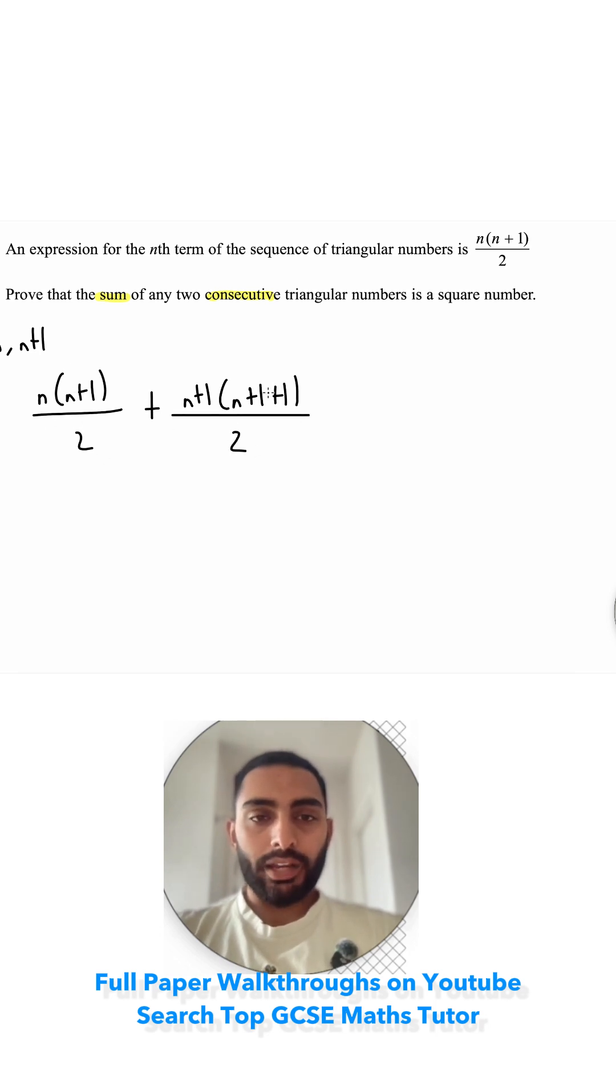Let's expand this bracket out. So n multiplied by n is n squared. n multiplied by 1 is n. That's over 2.